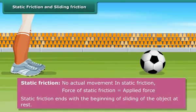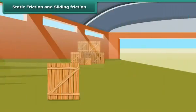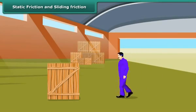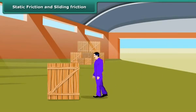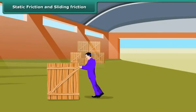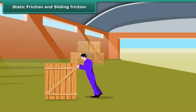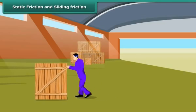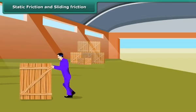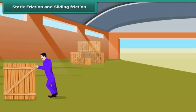When we push the ball, it starts moving. The frictional force present when one body moves slowly or slides over another body is known as sliding friction. Once a body slides, the sliding friction is reduced a little.